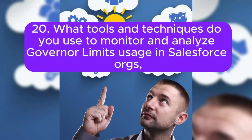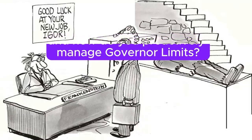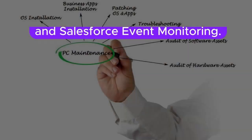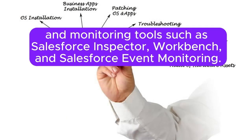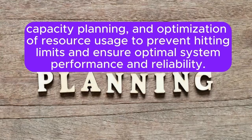Question 20: What tools and techniques do you use to monitor and analyze governor limits usage in Salesforce orgs, and how do you proactively manage governor limits? Answer: To monitor and analyze governor limits usage, you can use system logs, debug logs, Apex debuggers, and monitoring tools such as Salesforce Inspector, Workbench, and Salesforce Event Monitoring. Proactive management involves regular performance tuning, capacity planning, and optimization of resource usage to prevent hitting limits and ensure optimal system performance and reliability.